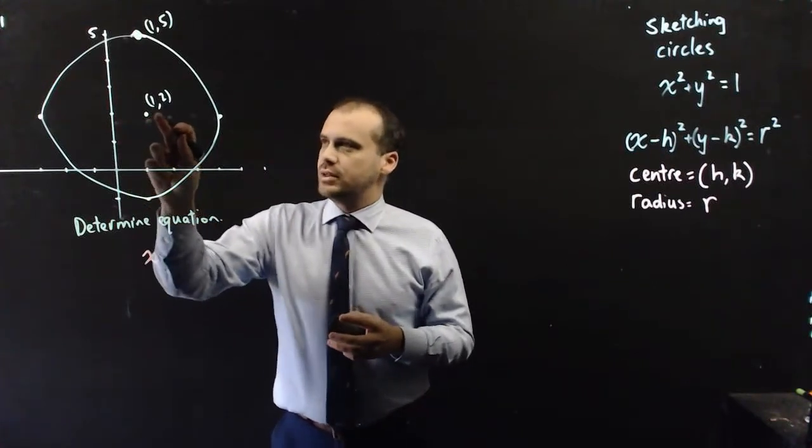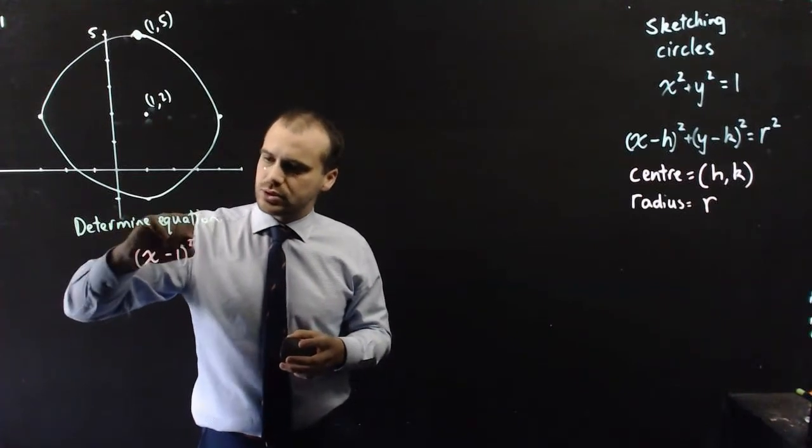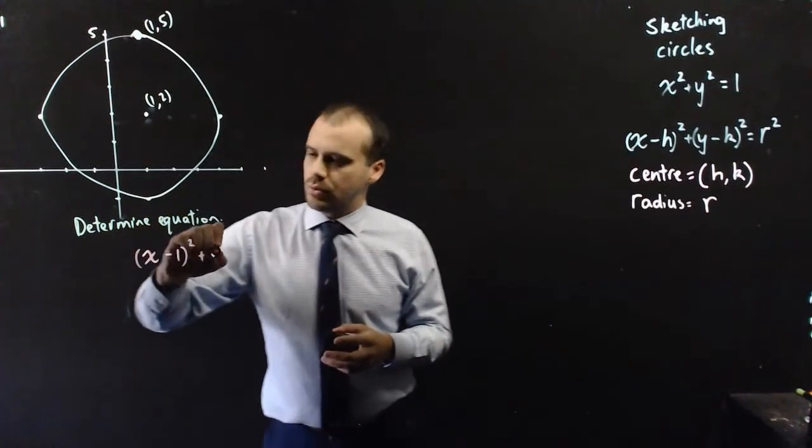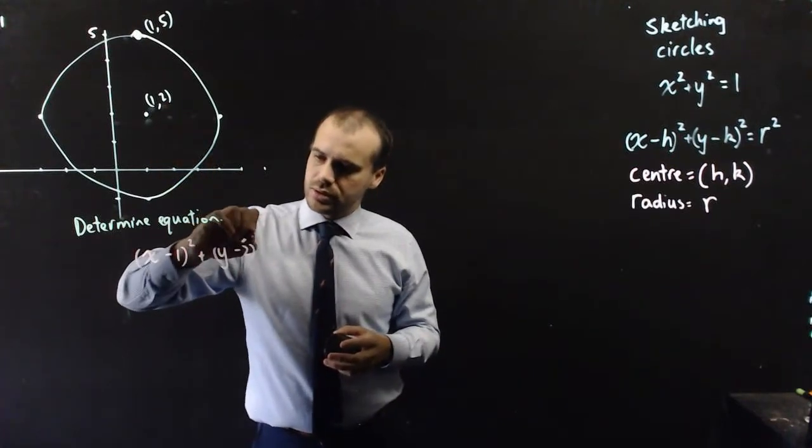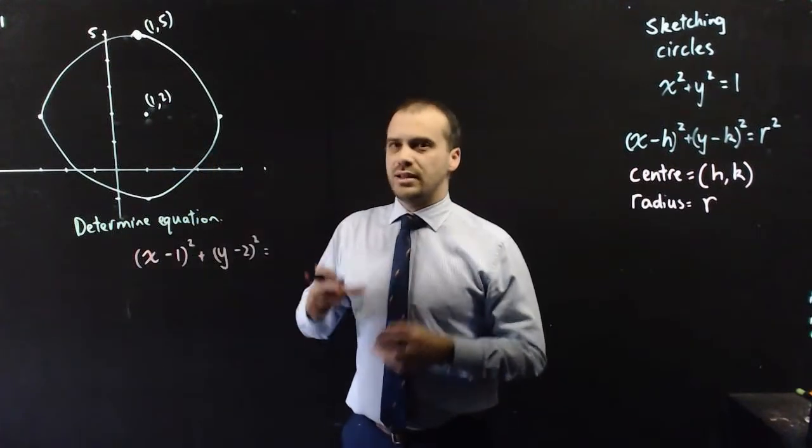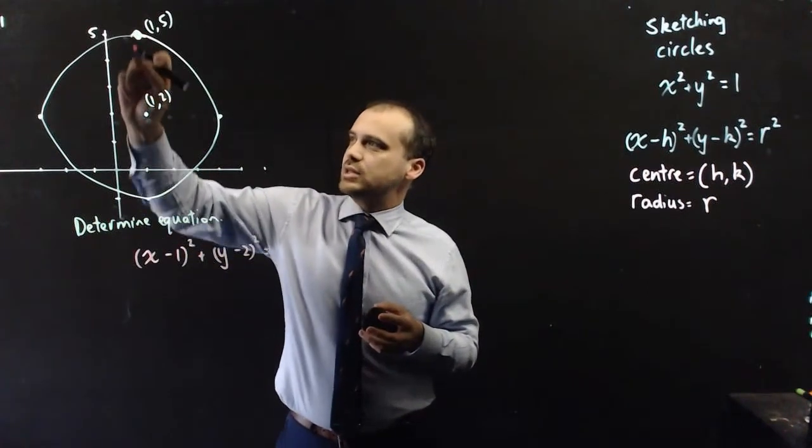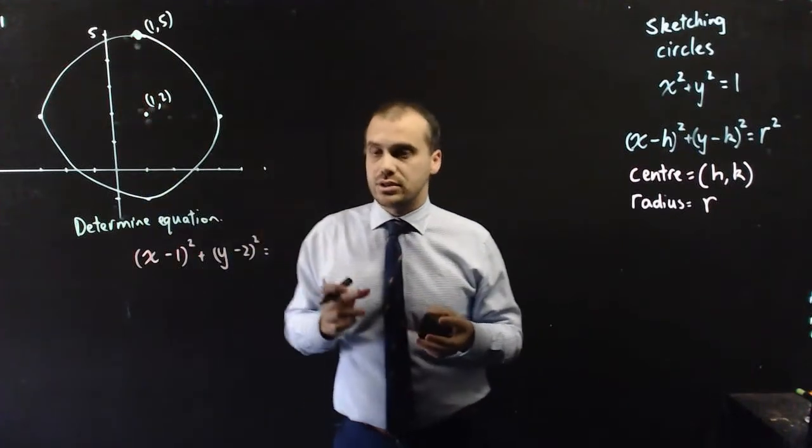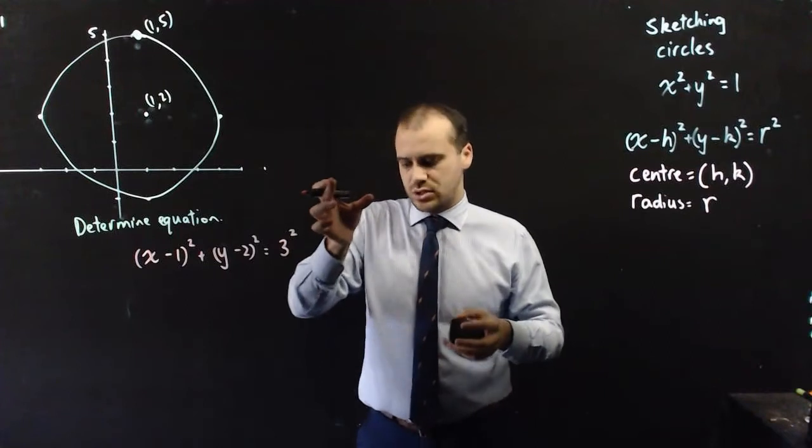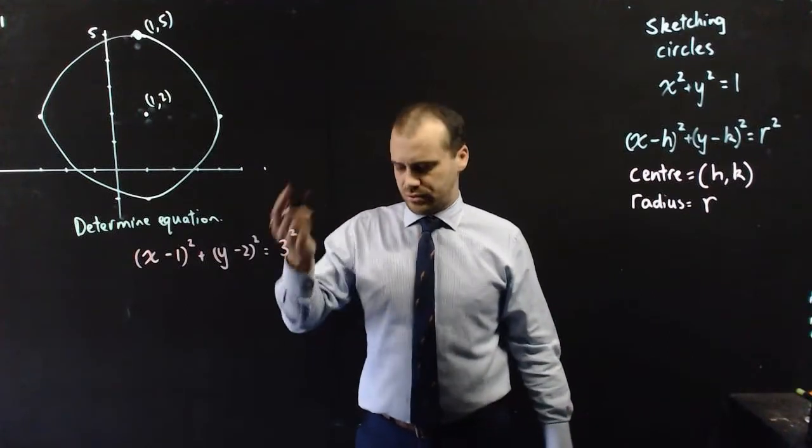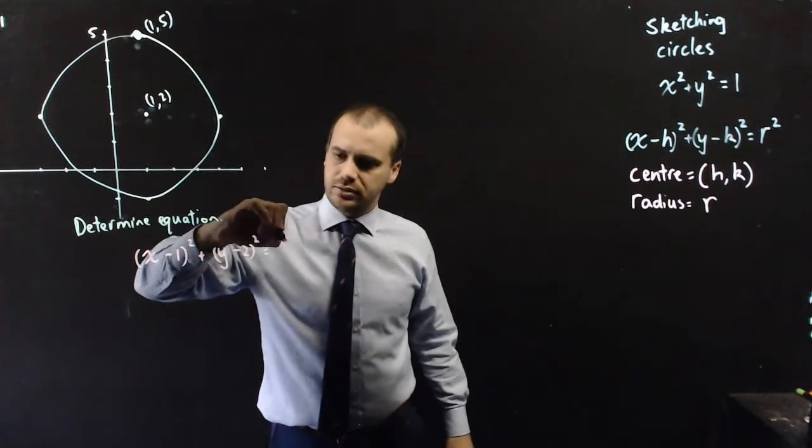Here's our center. So, x minus 1 squared plus y minus 2 squared equals, and then look and try to find the radius. I know this point is directly above it. This length here is 3 units. So, the equation is this, 3 squared, but you probably shouldn't write 3 squared when you can simplify it easily and just write 9.